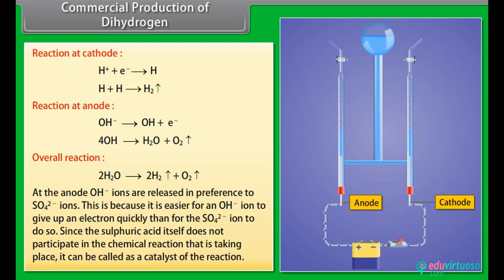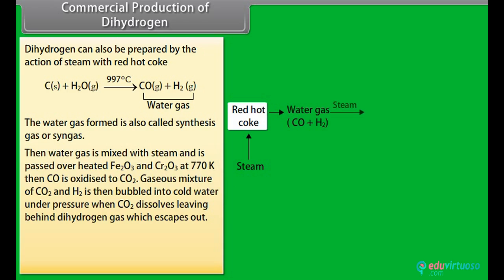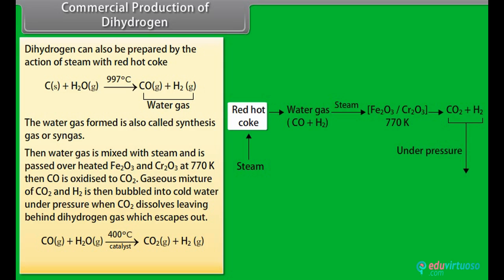Commercial production of dihydrogen. Dihydrogen can be prepared by the action of steam with red hot coke as given below. The water gas formed is also called synthesis gas or syngas. Then water gas is mixed with steam and is passed over heated Fe2O3 and Cr2O3 at 770 Kelvin. Then CO is oxidized to CO2. Gaseous mixture of CO2 and H2 is then bubbled into cold water under pressure when CO2 dissolves leaving behind dihydrogen gas which escapes out. This reaction is called water gas shift reaction.